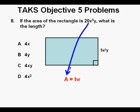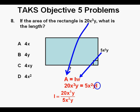We plug in 20x cubed y for the area, and we plug in 5x squared y for the width, or w. Then we rewrite the equation with area and width substituted for, and that is 20x cubed y equals 5x squared y times l. Now we need to solve for l. Dividing both sides of the equation by 5x squared y, we have l equals 20x cubed y divided by 5x squared y.